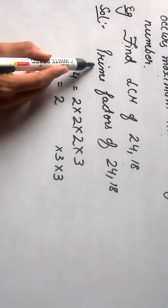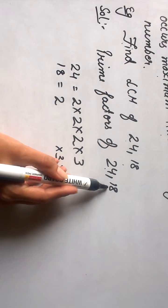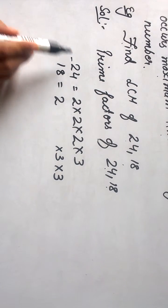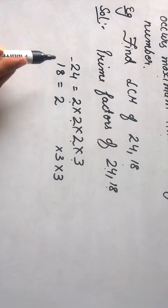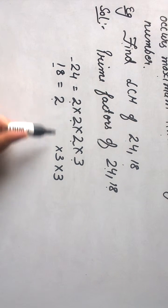We will solve this as prime factors for 24 and 18 are: prime factors for 24 are 2 into 2 into 2 into 3, and prime factors for 18 are 2 into 3 into 3.